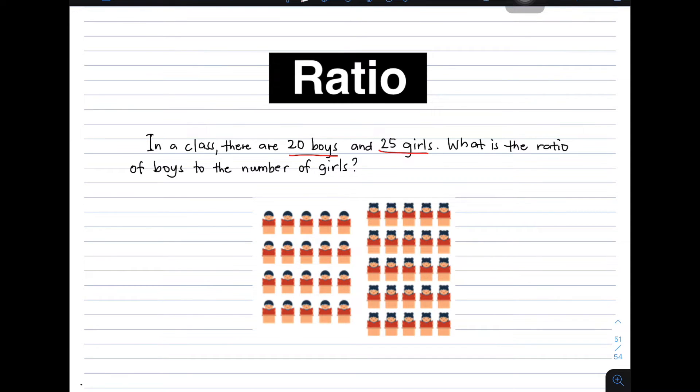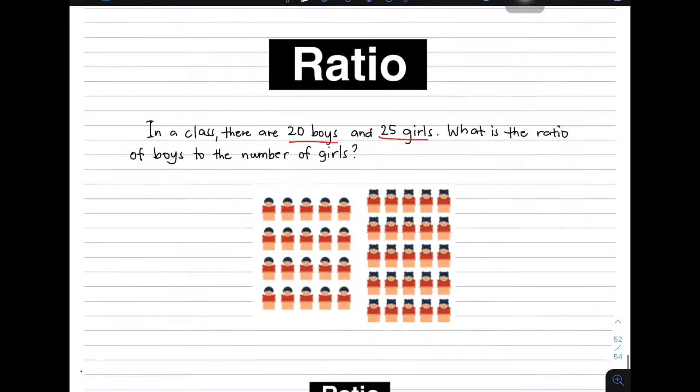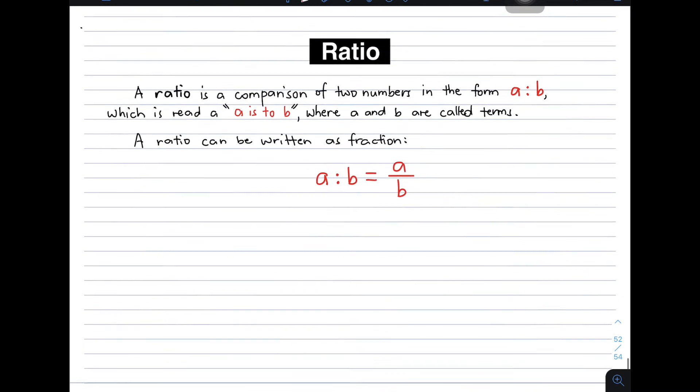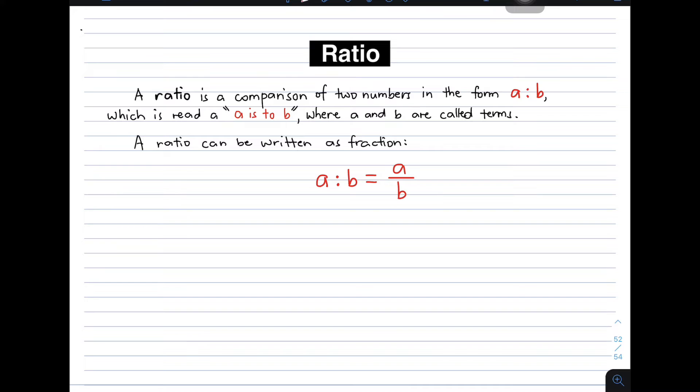So let us define ratio. Ratio is a comparison of two numbers in the form A is to B. Again, when we encounter this kind of illustration, it is read as A is to B, where A and B are called the terms. And then we have here another thing about ratio.